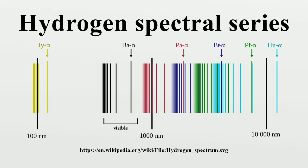A hydrogen atom consists of an electron orbiting its nucleus. The electromagnetic force between the electron and the nuclear proton leads to a set of quantum states for the electron, each with its own energy. These states were visualized by the Bohr model of the hydrogen atom as being distinct orbits around the nucleus. Each energy state, or orbit, is designated by an integer n, as shown in the figure.